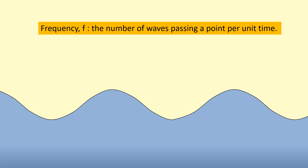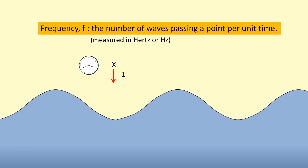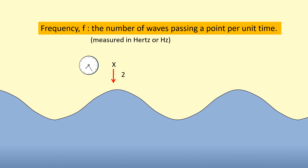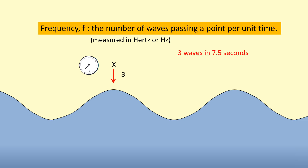In the context of waves, frequency is the number of waves passing a point per unit time — normally per second, which is hertz. Standing at point X, we start the timer and count the waves: one, two, three. Let's say that took roughly 7.5 seconds for three waves to pass. To find waves per second, we divide: 3 divided by 7.5 gives 0.4 waves per second, which is the same as saying 0.4 hertz — four tenths of a wave passing a point per second.